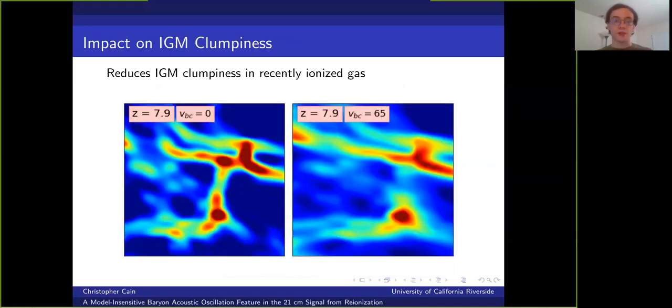So we ran simulations with and without the stream velocity and looked at how this impacts the recombination rate. And this plot shows a zoom in of a small patch of gas that has been recently reionized in simulations with stream velocities of zero and twice the RMS value. And you can see that the gas clumping is suppressed significantly in the highest stream velocity run. And this demonstrates that patches of gas in parts of the IGM with higher stream velocities should have lower recombination rates.